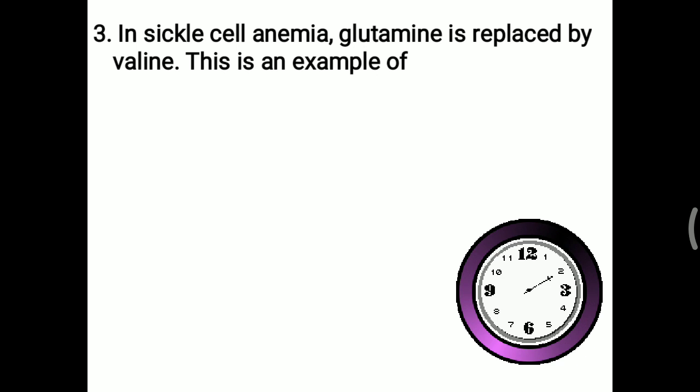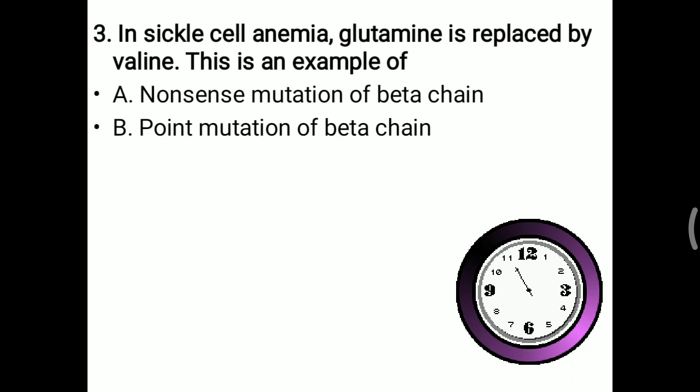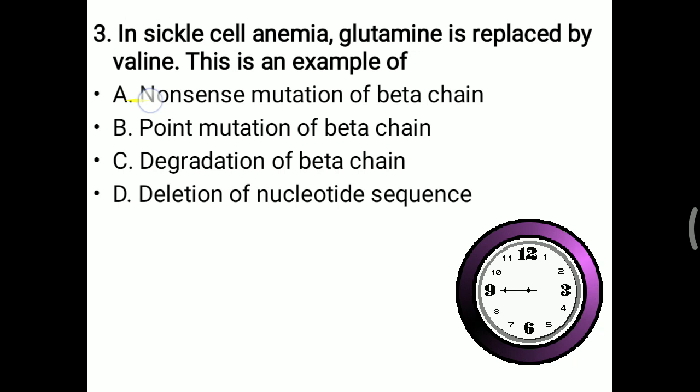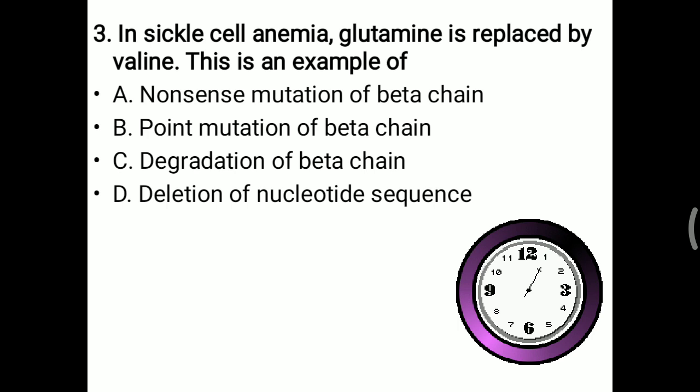Next question: in sickle cell anemia, glutamine is replaced by valine. Is this an example of nonsense mutation, point mutation, degradation of the beta chain, or deletion of nucleotide sequence? Nonsense mutation means the whole sequence is altered — that is not occurring in sickle cell anemia. Point mutation — yes, it is a point mutation where a single nucleotide replacement causes valine to be generated instead of glutamine. So glutamine replaced by valine is a point mutation of the beta chain.